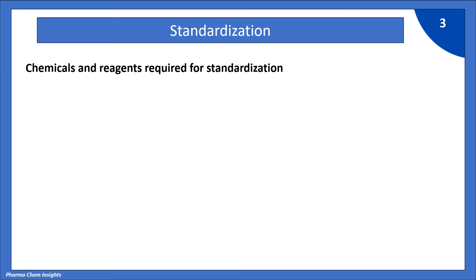Chemicals and reagents required for standardization. So we require 0.1 normal NaOH, 0.1 normal oxalic acid and phenolphthalein indicator.